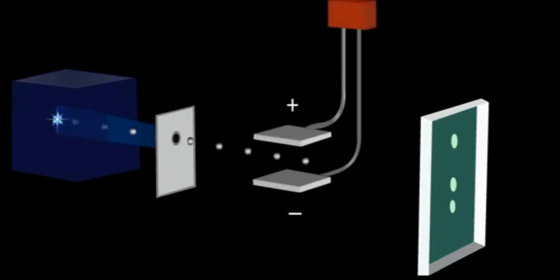The radioactive radiations coming out from the sample is allowed to pass through a narrow slit. After passing through the slit, the radiations were allowed to pass through a strong electric field.